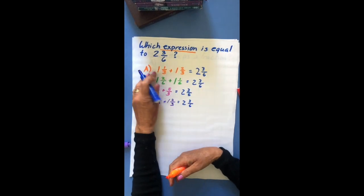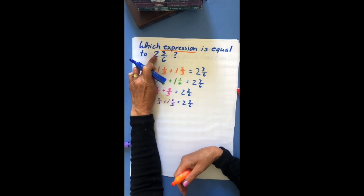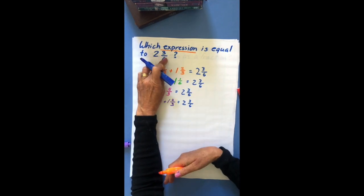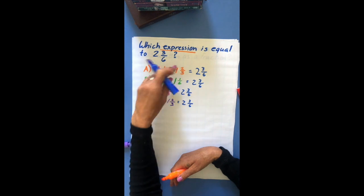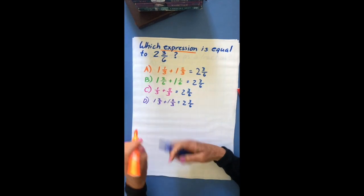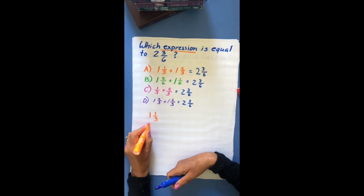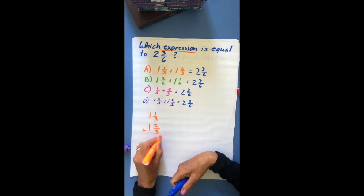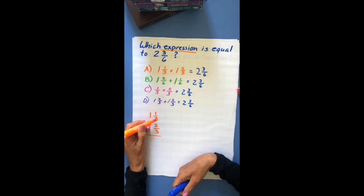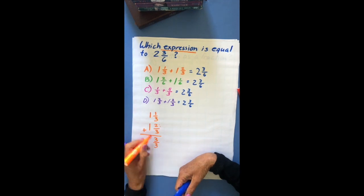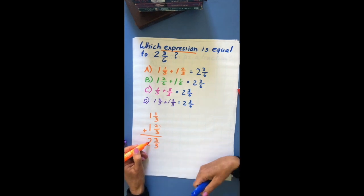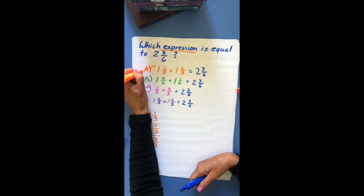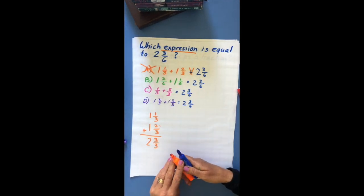This is called a mixed number — a whole number matched with a fraction. To solve, I write each option vertically because it reduces mistakes. For the first option, I do the fraction part first: the bottoms match, so I add the tops to get 3, then add the whole numbers to get 2. That gives 2 and 3 thirds — not equal to 2 and 3 sixths, so that's wrong. Next option: 1 and 2 sixths plus 1 and 1 sixth. Adding the fraction parts: 2 plus 1 is 3 sixths. Adding whole numbers: 1 plus 1 is 2. That gives 2 and 3 sixths — this looks correct.